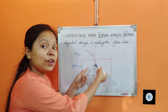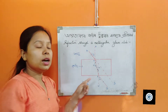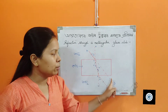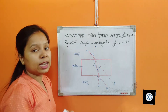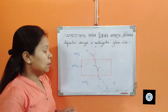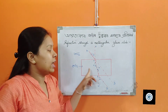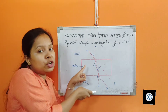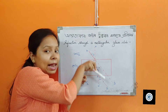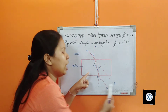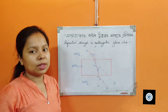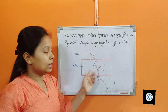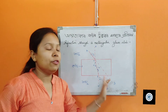When the light reaches the second surface of the glass slab, it comes from denser medium to rarer medium. When light travels from denser medium to rarer medium, the refracted ray will move away from the normal.